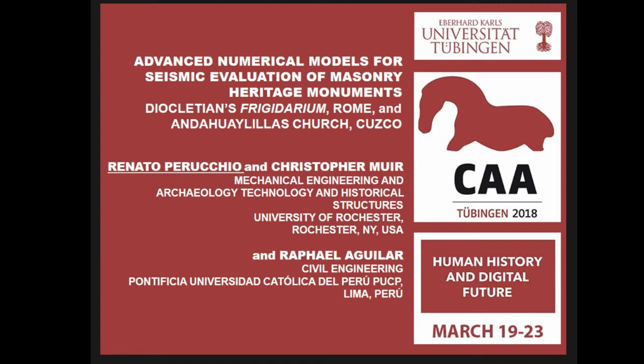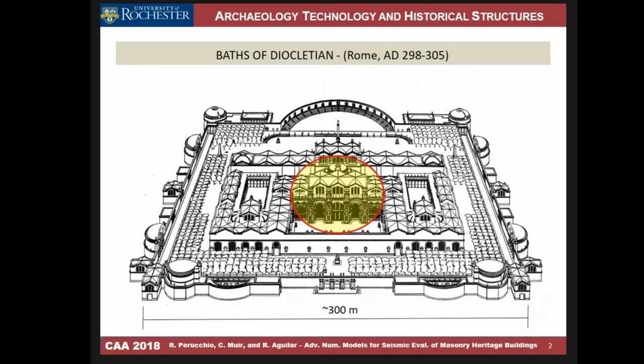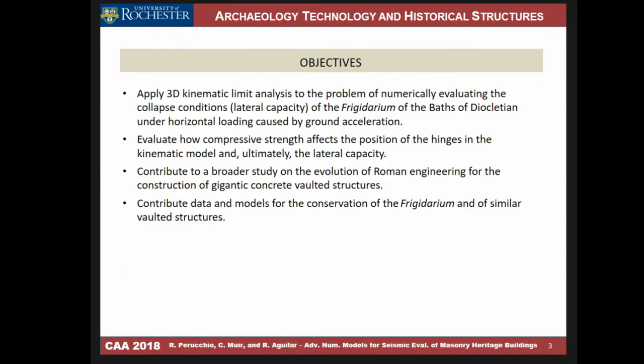The goal is how to come up with highly simplified models that still give a viable solution. I'll present two examples: one is the frigidarium of the Baths of Diocletian in Rome, and the other is an adobe church in Peru built during the early Spanish domination. Instead of using standard finite element analysis, I want to use another approach.